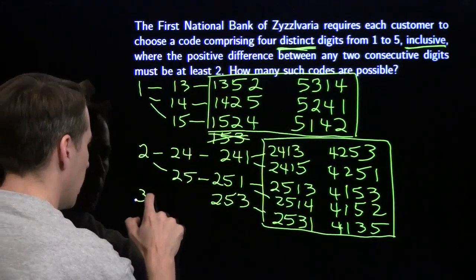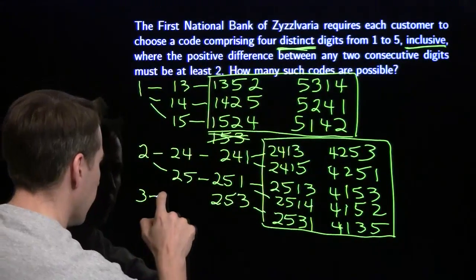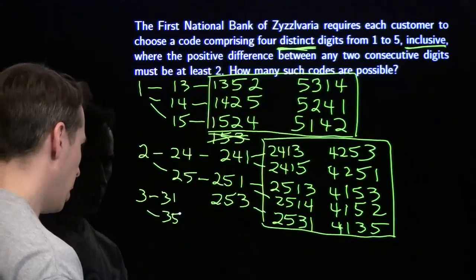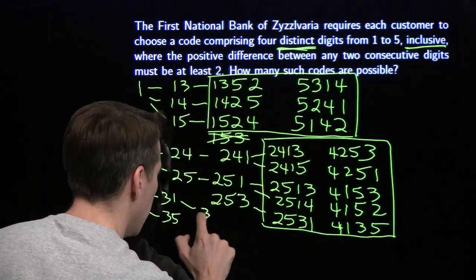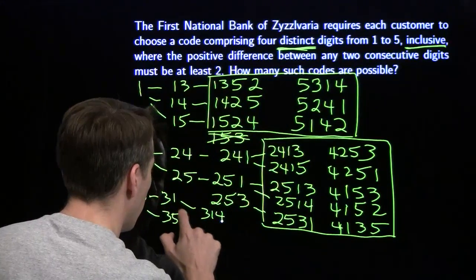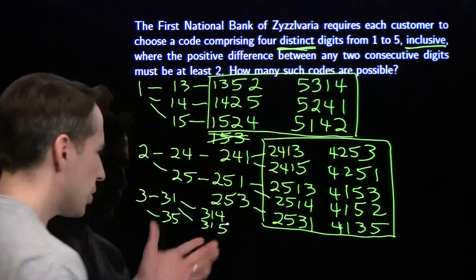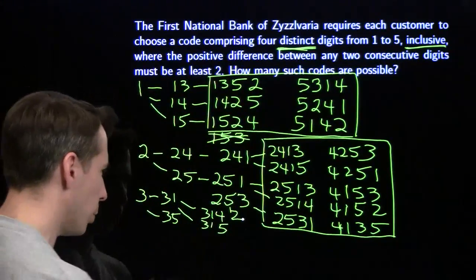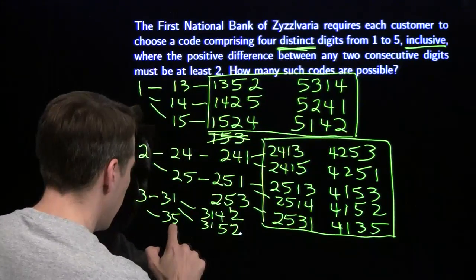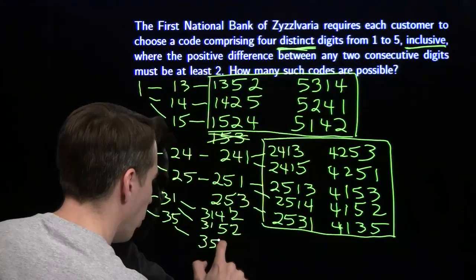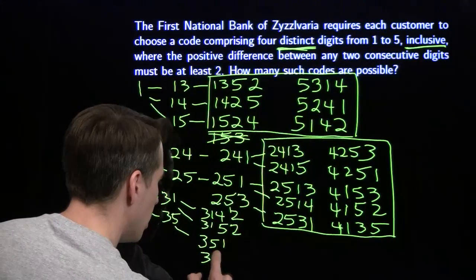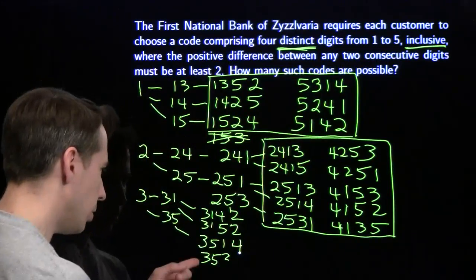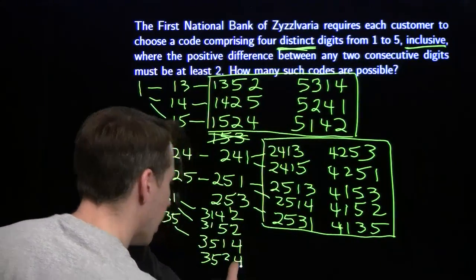Starting with three, we can go to 3-1 or 3-5; we can't go 3-2 or 3-4. From 3-1 we can go 3-1-4 or 3-1-5. Starting 3-1-4, we can't put the five after that but we can put the two: giving 3-1-4-2. Starting 3-1-5, we can put the two: 3-1-5-2. From 3-5 we can go 3-5-1 or 3-5-2. Starting 3-5-1, we can put the four after that but not the two: 3-5-1-4. Starting 3-5-2, we can't put the one after that but we can put the four: 3-5-2-4.